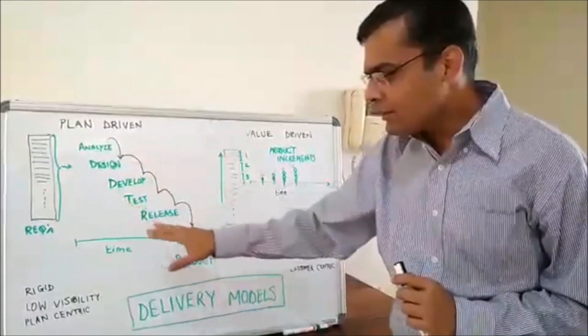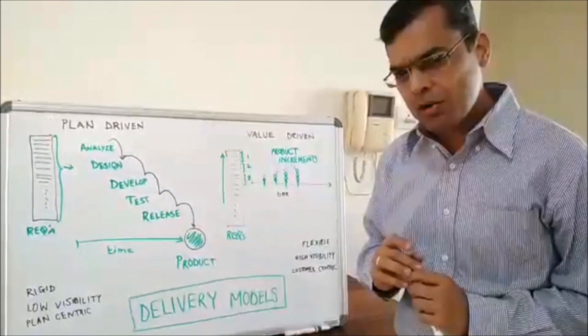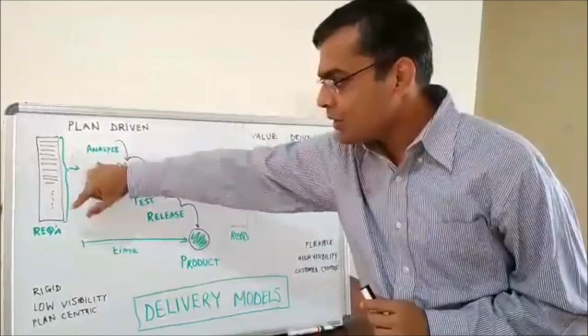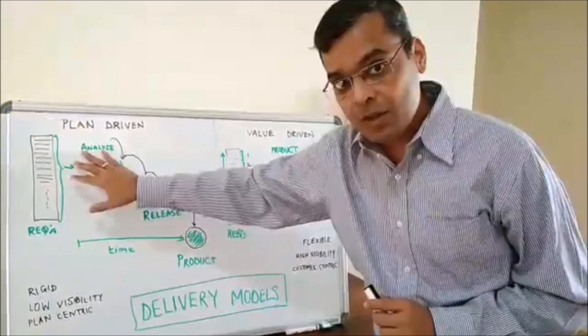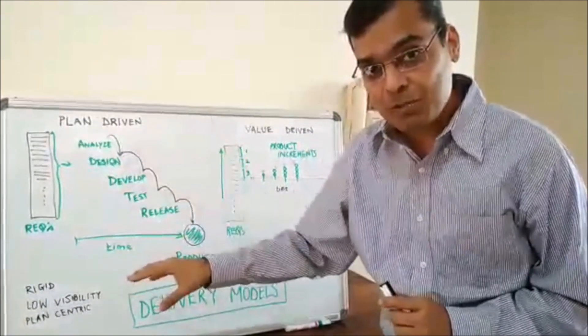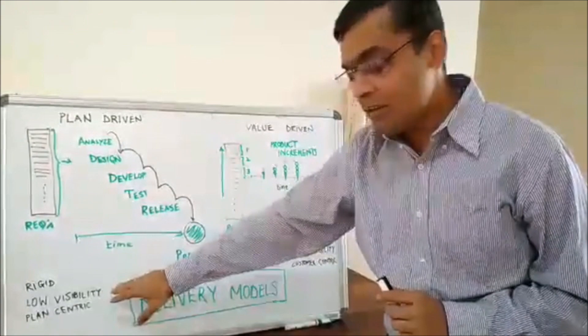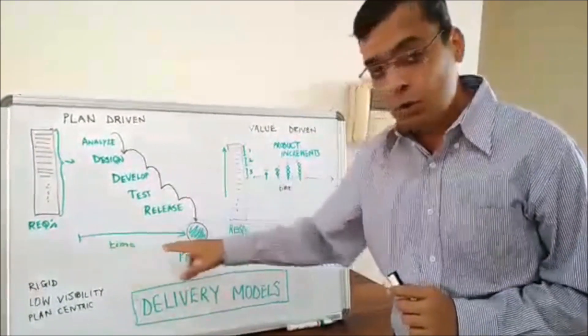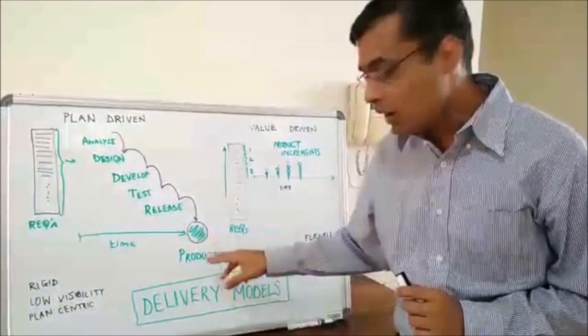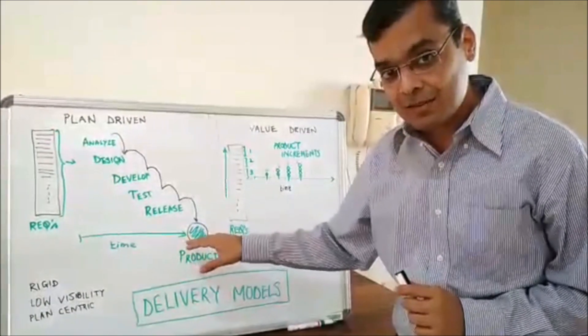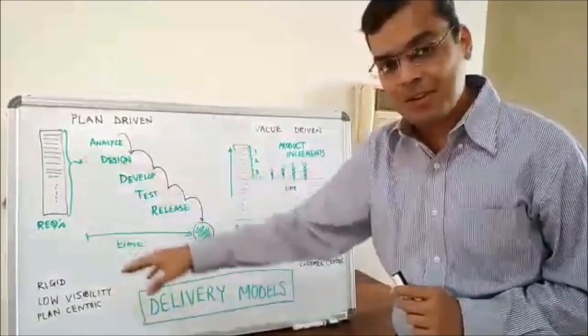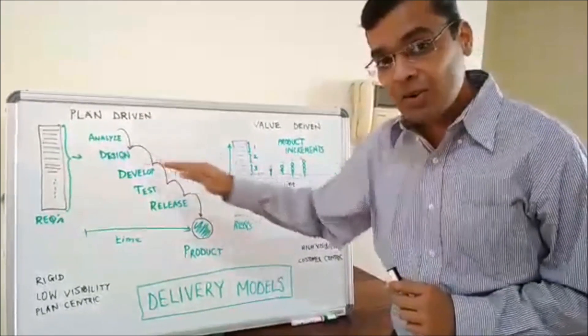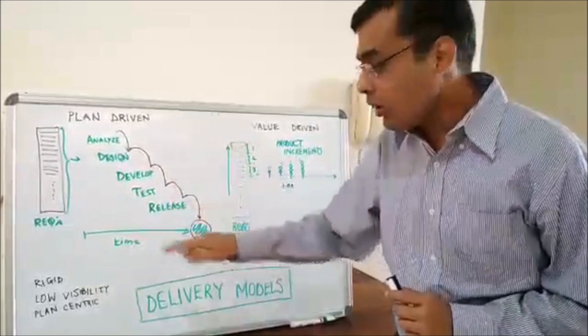So if you look at it for a plan-driven model, it is pretty rigid in the sense that the requirements are fixed upfront. So any changes to this will have to go through a change management process. Then there is low visibility about the product because the customer during the entire duration of the project will not be able to see anything. And also it is plan centric, meaning you have a plan in place and based on that you will work on the product.